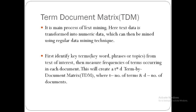The main process of text mining is the Term Document Matrix. The text data is transformed into numeric data, which can then be mined using regular data mining techniques like clustering analysis and association analysis. First, identify key terms, keywords, phrases or topics from the text of interest; then measure the frequency of terms occurring in each document. This creates a T×D term-by-document matrix, where T is the number of terms and D is the number of documents.